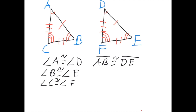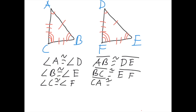Side BC is congruent to side EF, and side CA is congruent to side FD. These are the different parts of the triangles that are congruent to each other.